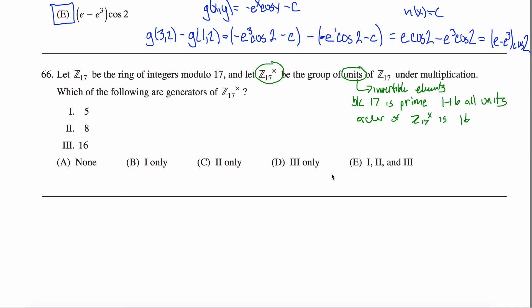If I can find an element whose order is 16, I'd be done. So I need to figure out which of these elements have order 16. The numbers get a little big and you don't have a calculator for this, so this might be a lot of math to do in your head. But some of them you can eliminate pretty quickly.